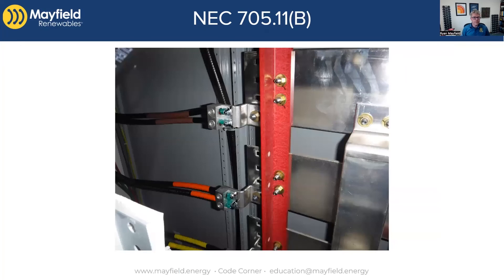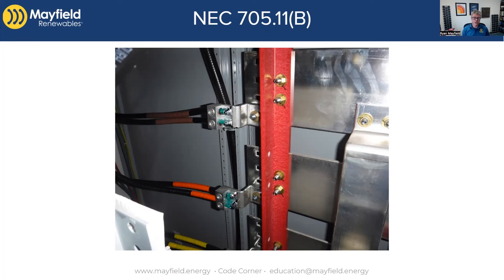And then 705.11b — here's an image showing some conductors that are obviously larger than 6 AWG, parallel runs greater than one per other code rules. Just an image showing that we have to have our conductors properly sized. We're going to talk in a future CodeCorner about these connections, their ratings, field listing, and all that. But making sure your conductors are large enough to meet that code requirement is the key takeaway.